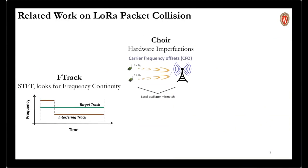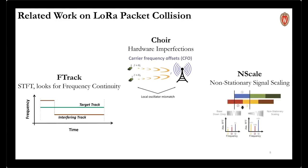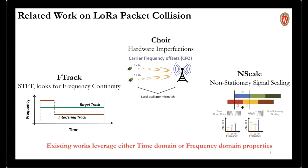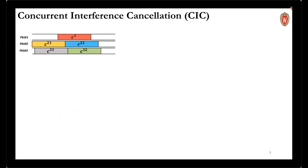There has been recent interest in decoding LoRa packet collisions. POIL is a pioneering work leveraging hardware imperfections to disentangle packets. FTrack uses short-time Fourier transform to look for frequency track continuity. NScale translates timing offsets to FFT peak heights through non-stationary signal scaling. Most existing works operate on either time or frequency domain. We present CIC — Concurrent Interference Cancellation — a novel demodulator that uses both time and frequency components of the collided signal to decode individual packets.